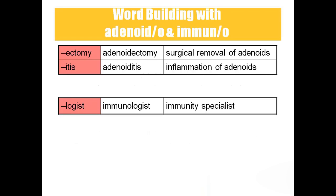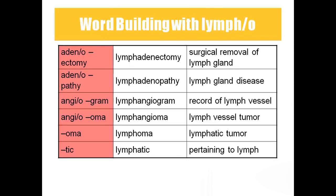Word building: Adenoidectomy — surgical removal of adenoids. Adenoiditis — inflammation of the adenoids. Immunologist — immunity specialist. Lymphadenectomy — surgical removal of lymph gland. Lymphadenopathy — lymph gland disease. Lymphangiogram — record of lymph vessel (angiogram means record of vessel). Lymphangioma — lymph vessel tumor.